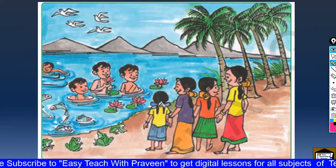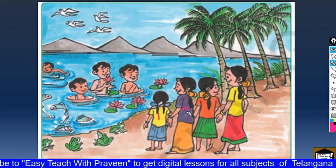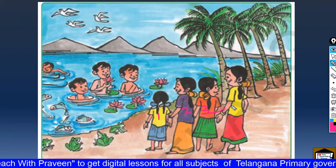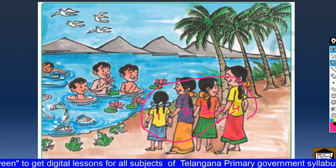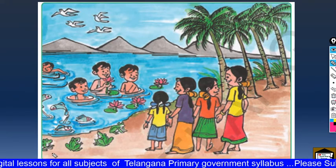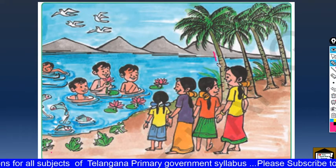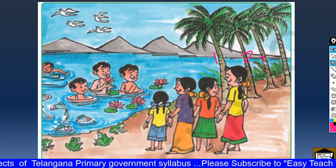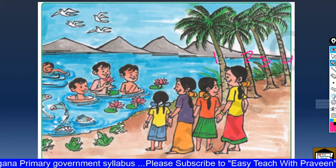So we are having girls. How many girls are there? One, two, three, four. So we saw four girls in the picture. Next, trees. How many trees are there? One, two, three, four. So four trees are there.